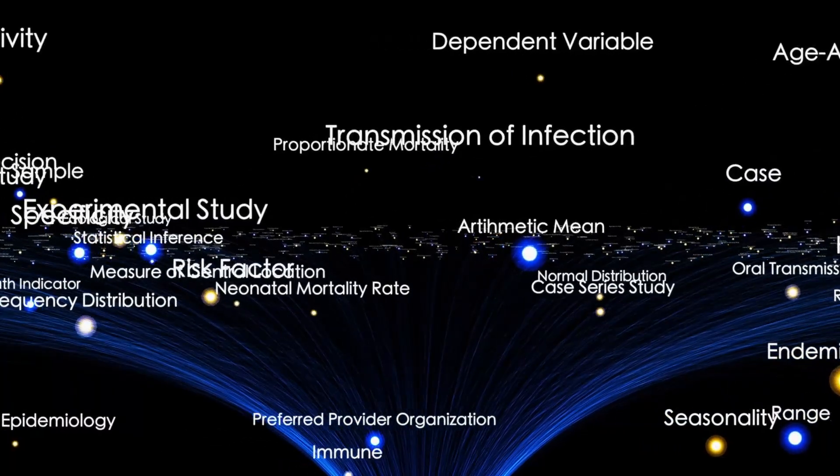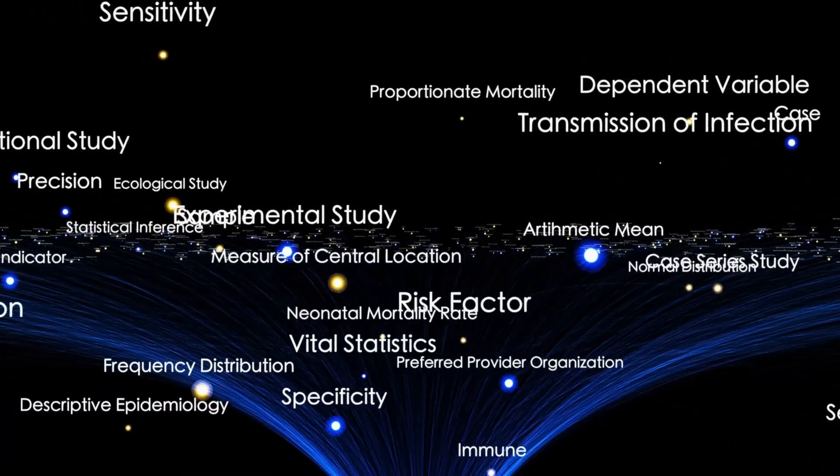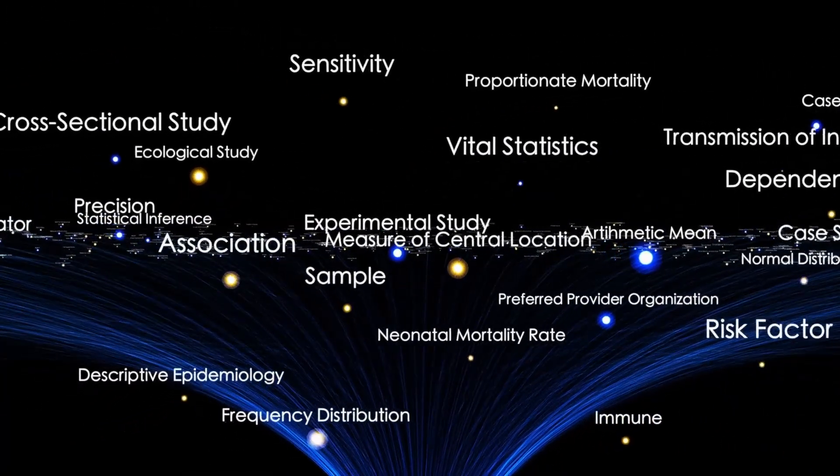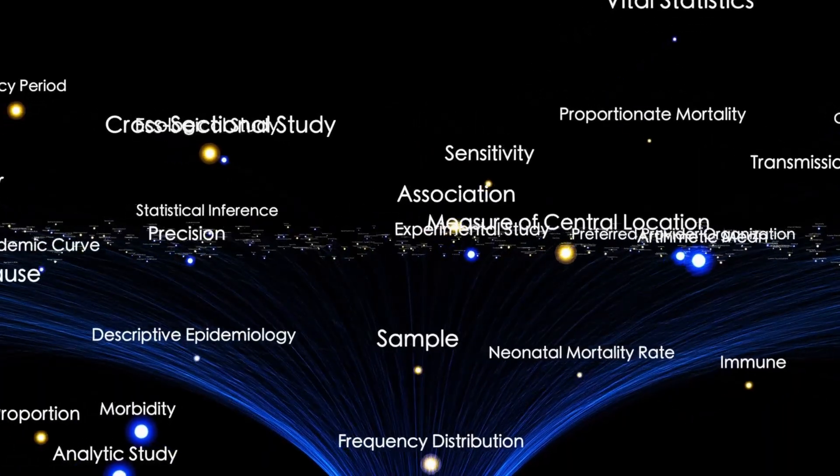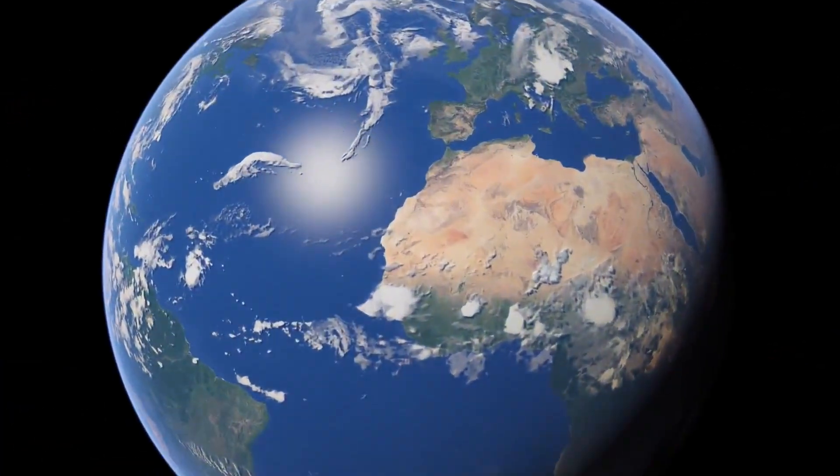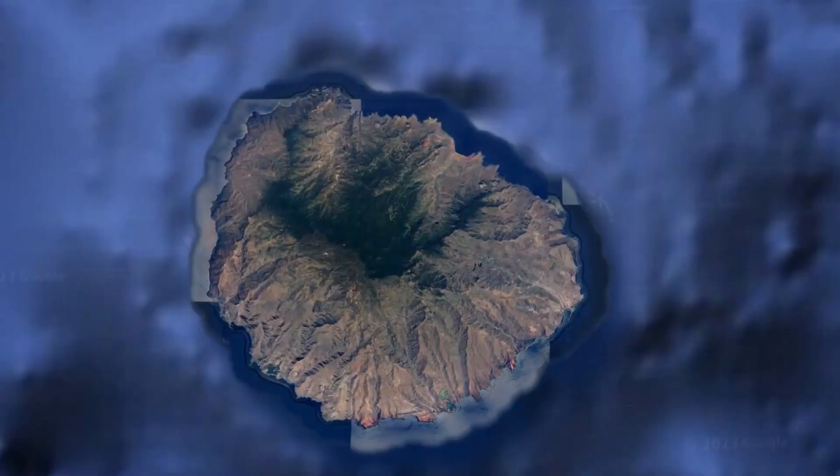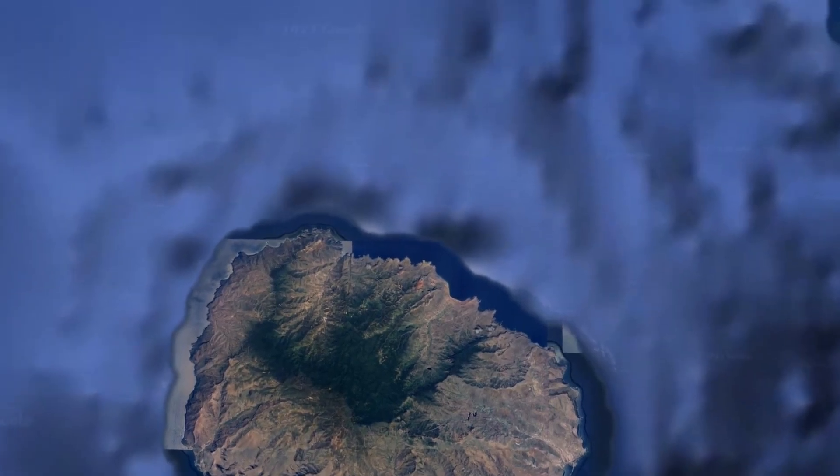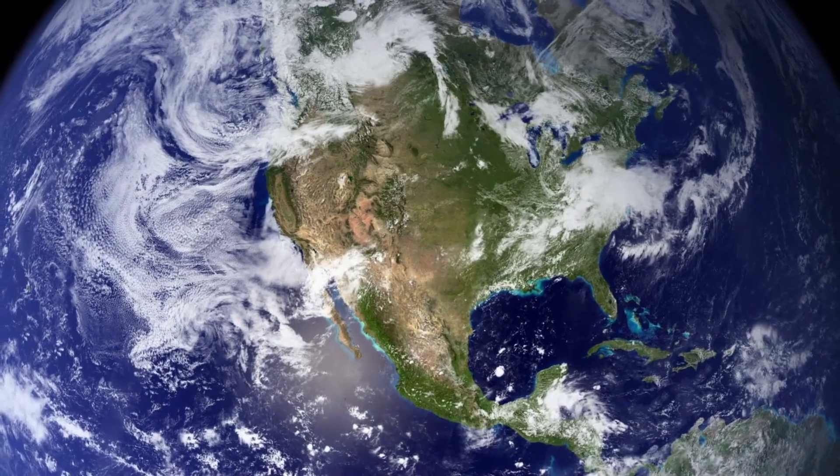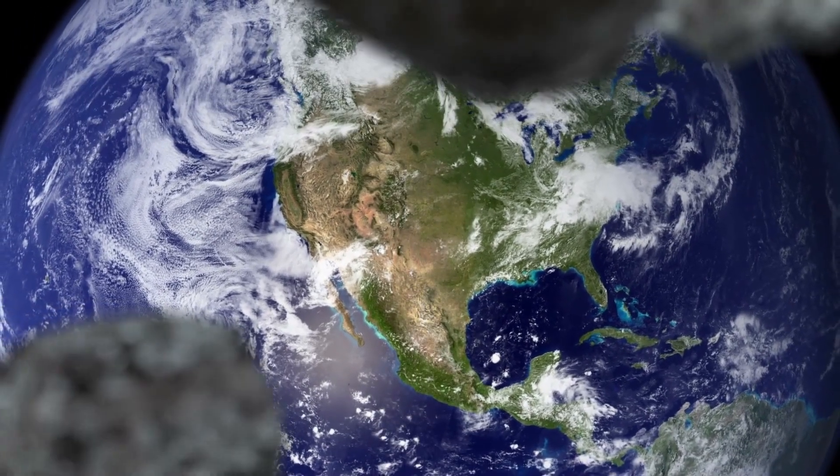If this object really altered its trajectory while near the sun, then what we're witnessing may not just be an astronomical anomaly, it could be intentional. The International Asteroid Warning Network, or IAWN, has one purpose: to detect and prepare for threats that could endanger life on Earth.